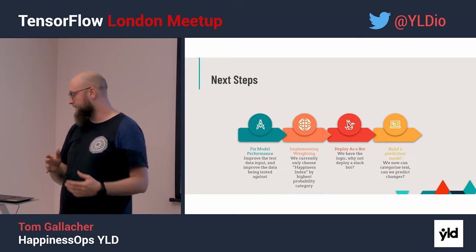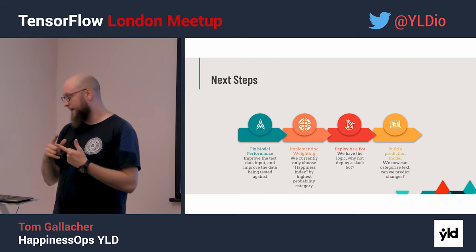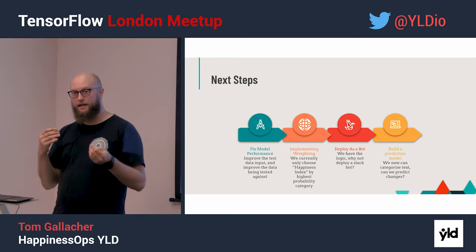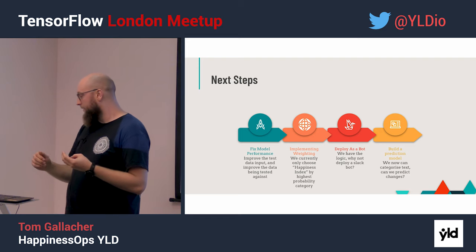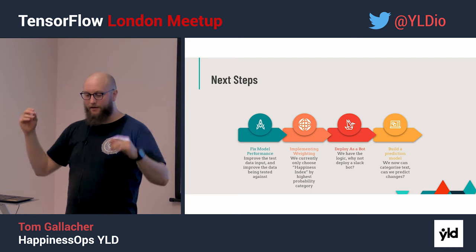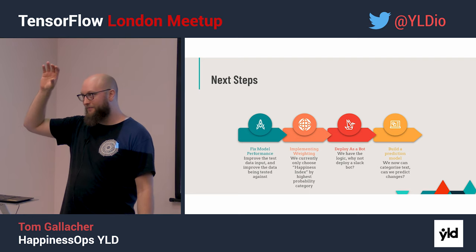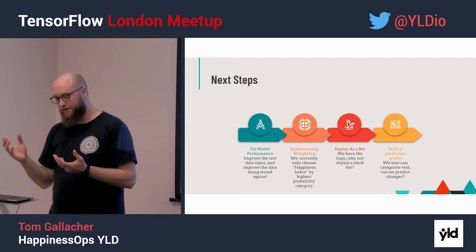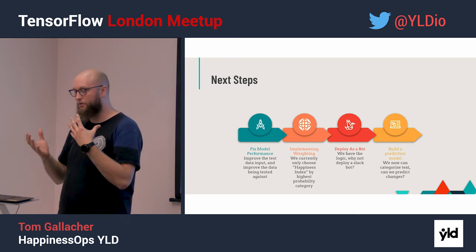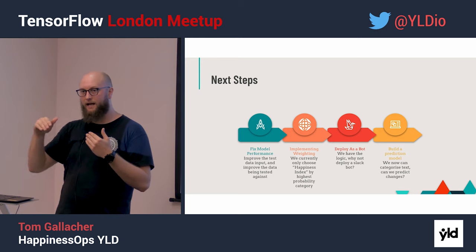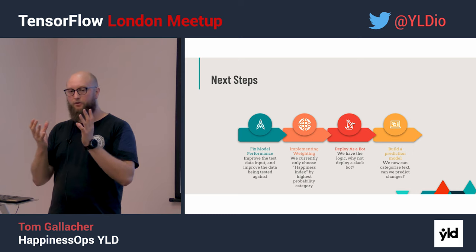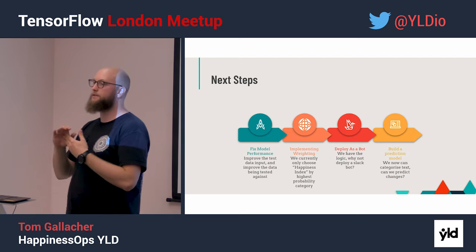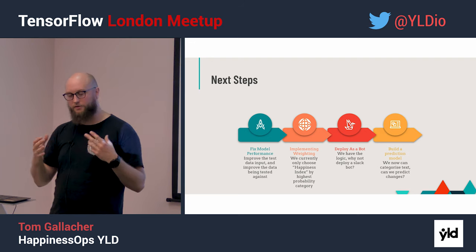Next is to fix model performance: improve the test data, clean up the data input, and start testing against proper data. I still want to produce a happiness index — rather than just plotting the found categories, I want to derive a weighted numerical meaning from the data for what happiness actually is. Instead of a specific tag, have a weighted numerical value for how happy or not something is. That's something I want to look at next, whether that's a different model or the same model with extra stuff added.